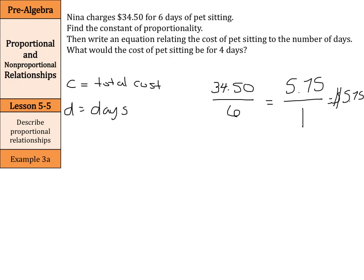Now, as for our equation, if we think about it, our total cost C is going to equal that $5.75 per day times D, the number of days for pet sitting. So, now we can use this equation. Cost equals $5.75 and multiply by the number of days. In this question, we're asked for four days. Multiply $5.75 by four and you come up with $23.